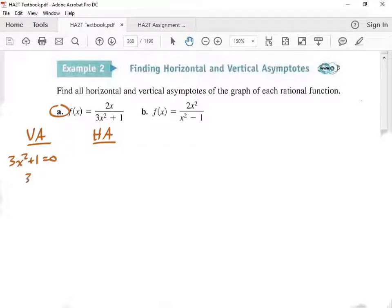If I subtract one from both sides, I get 3x² equals negative one, which some of you guys who can see into the future see that we have a problem. Because if we divide both sides by three and then square root, can't do it. There is no solution for this one. What does that mean? There's no vertical asymptote for this one.